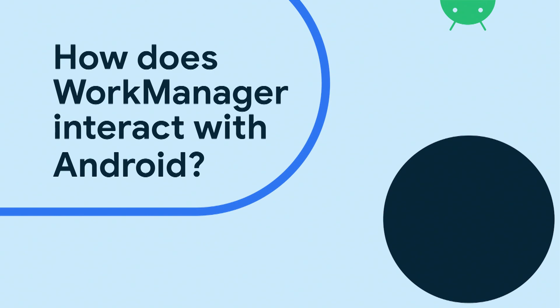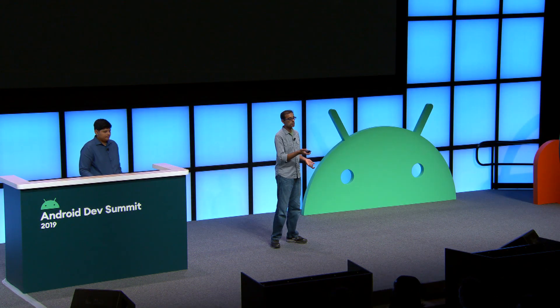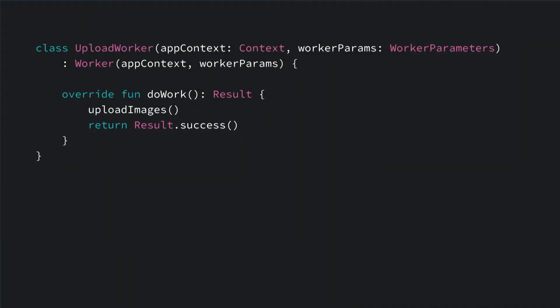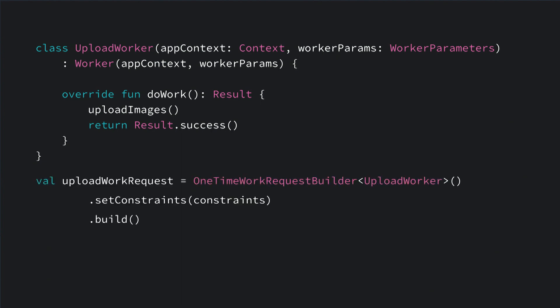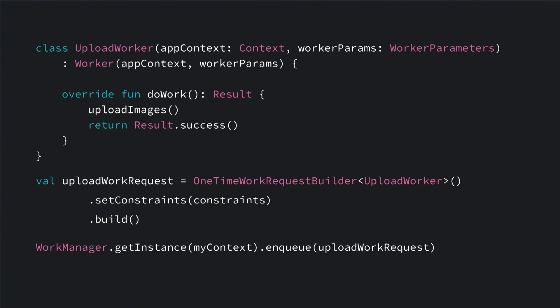Let's dive into some topics. We're going to be covering a broad swath of things that will help you understand how WorkManager works under the hood. The first topic is how does WorkManager interact with the OS? You probably have a simple worker like this — a worker that uploads images. You'll create a work request, add some constraints — in this case network constraints — build it, and enqueue it. This is the basic WorkManager workflow.